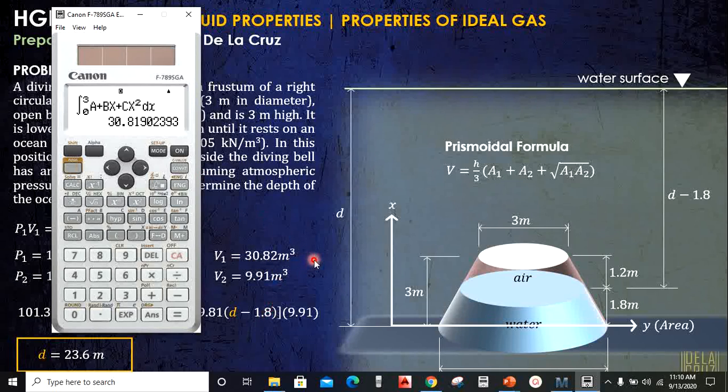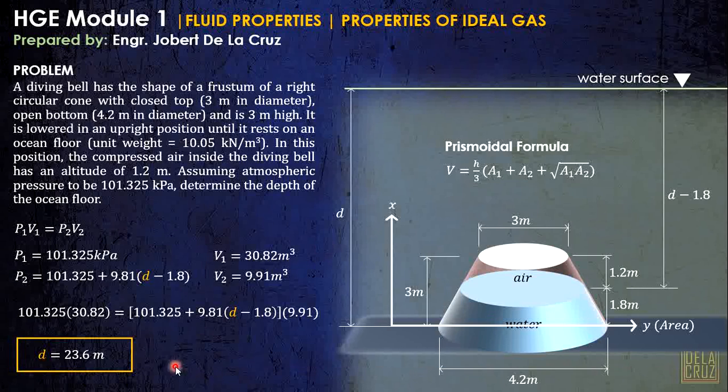I will not go further in this discussion. This is for integral calculus or solid geometry topic. All we need to know here is just the principle, the properties of the ideal gas. Now, after this, we have defined all the required parameters. Using this principle, substitute P1 is this one, V1 is this one, P2 is this whole term, and V2 is this one. So, we can calculate the depth of the ocean floor. That's the technique of this problem.